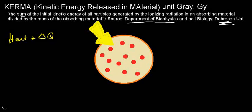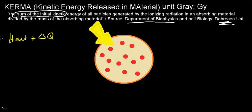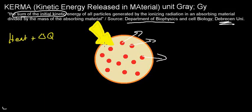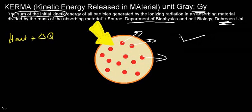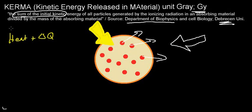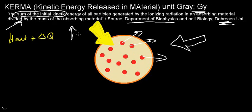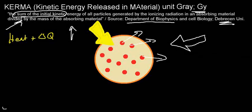KERMA is essentially the sum of all energies released in the material by the ionizing radiation, measured before particles start moving. The units are also gray. It functions more as a conceptual tool and is not commonly used in everyday practice, as far as noted.